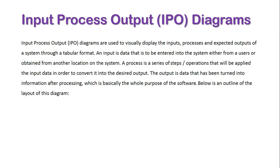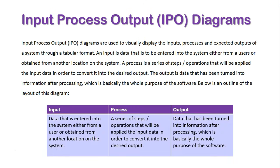Below is an outline of the layout of an IPO Diagram. We first put our inputs into the system. An input is data that is entered into the system, either from a user or obtained from another location of the system.